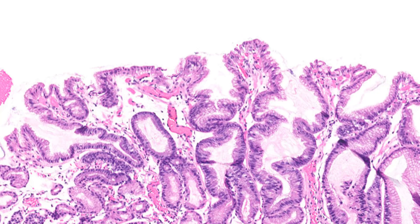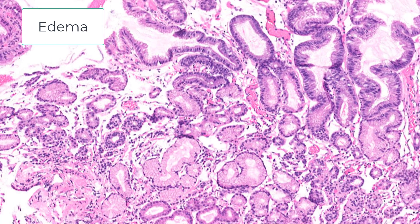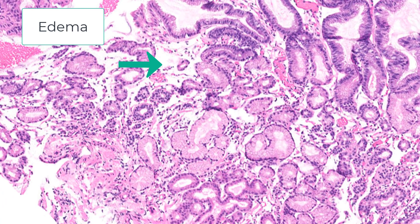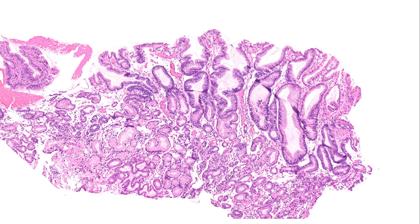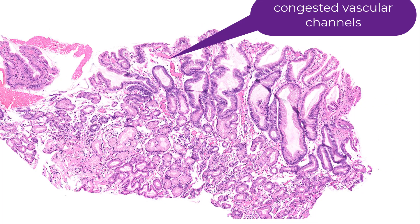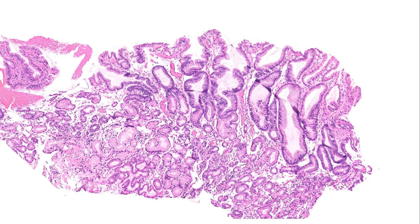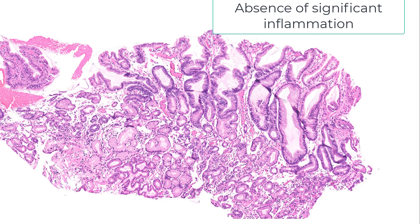Feature number three is edema. Feature number four is smooth muscle proliferation — I don't really see it here, but that's okay. Feature number five is those congested, dilated vascular channels, which are not too obvious. Feature number six is the absence of significant inflammation.